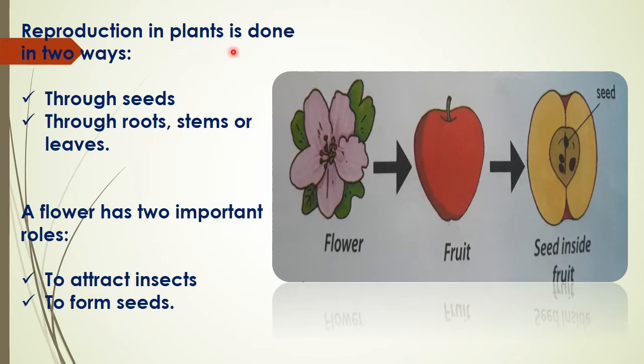Reproduction in plants is done in two ways — either through seeds or through other parts of the plant such as roots, stem or leaves.